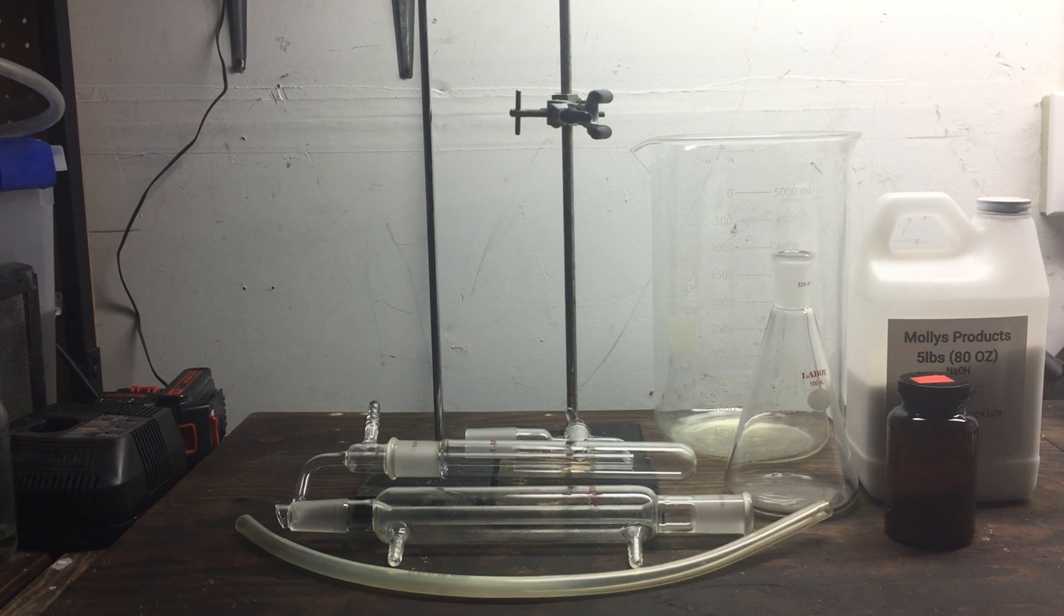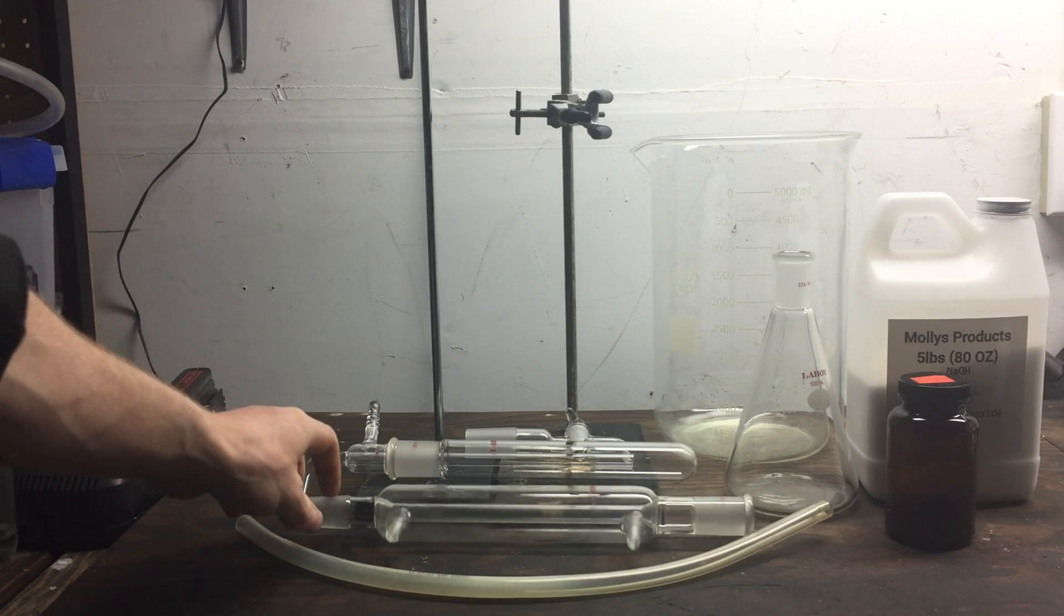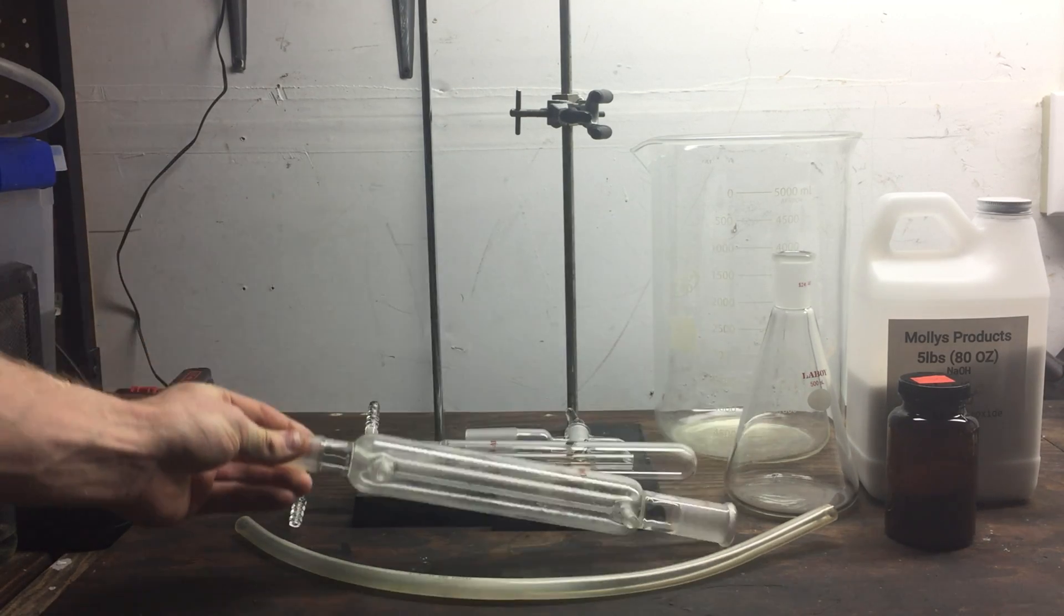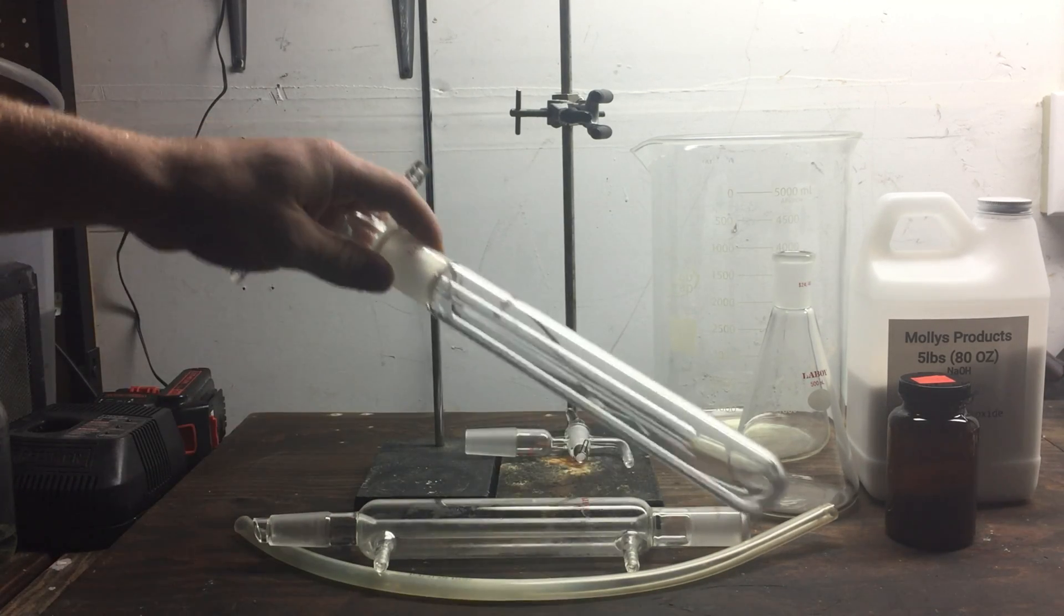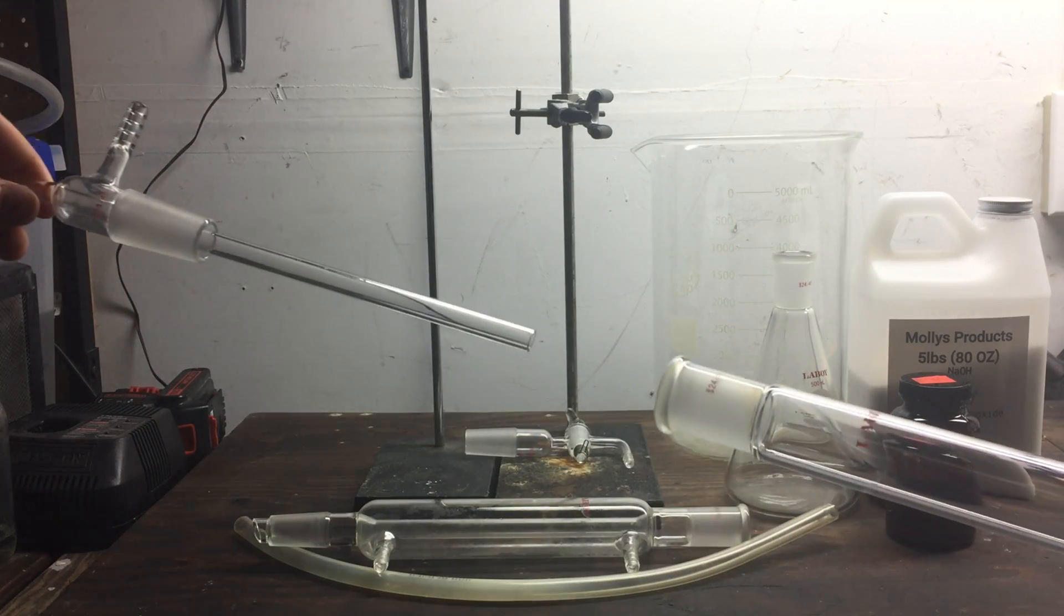With that said, here is the equipment I used in the experiment. I used my distillation column as a makeshift refluxing condenser. I used my gas washing bottle to collect the ammonia gas in solution.